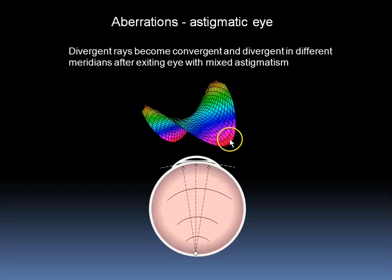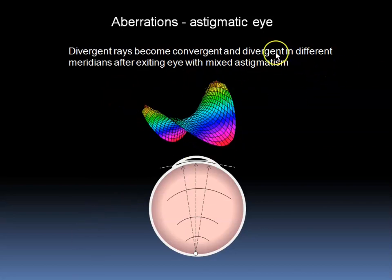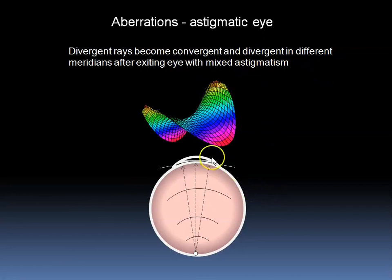It looks like a potato chip. In other words, in this eye, the eye is myopic in one axis but hyperopic in the other.